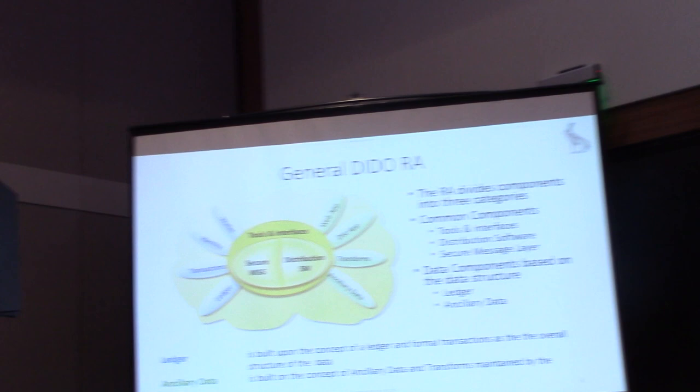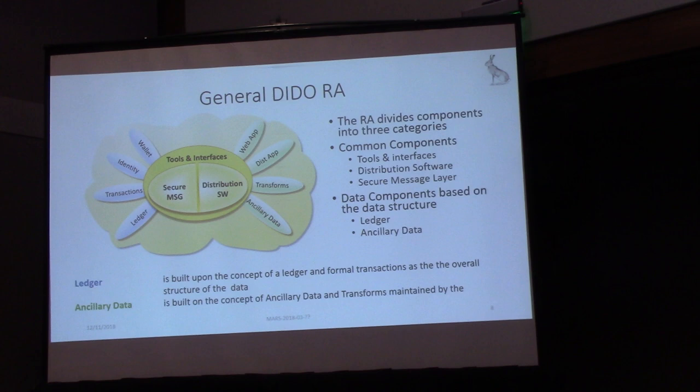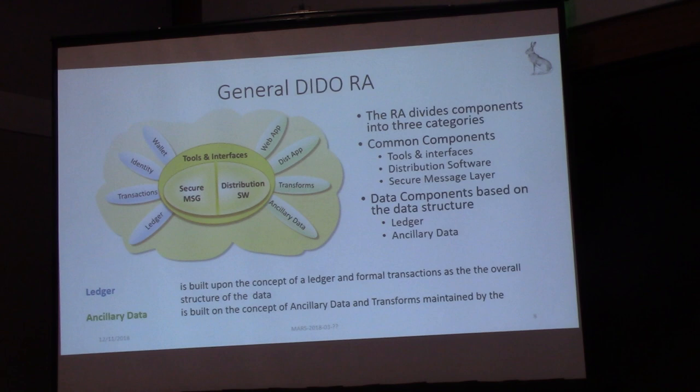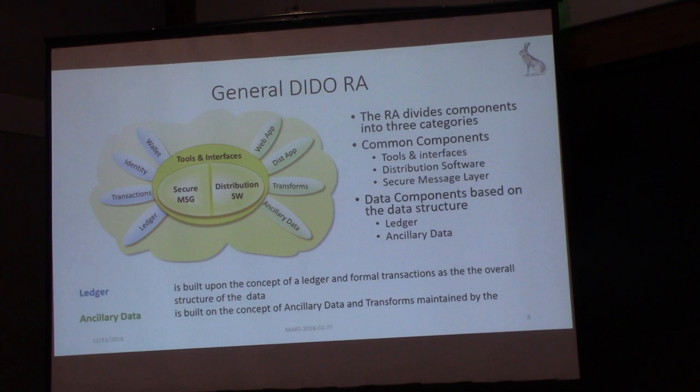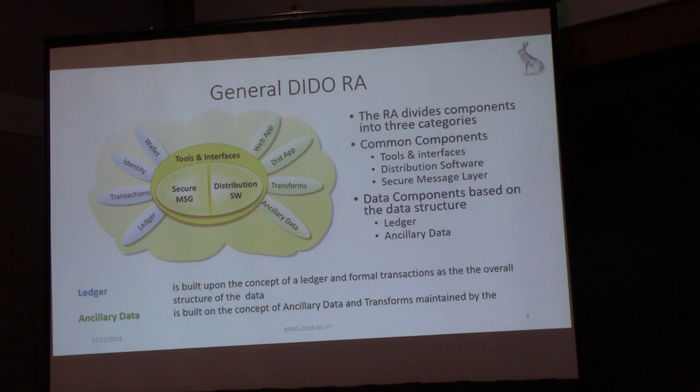Our general DIDO reference architecture shows the whole node. Every node could have all of these things or some of them, depending on their role. There's a blue side and a green side. The blue side deals with the ledger — the primary data object you're trying to deal with. The green side has to do with ancillary data, support data, and oracles.